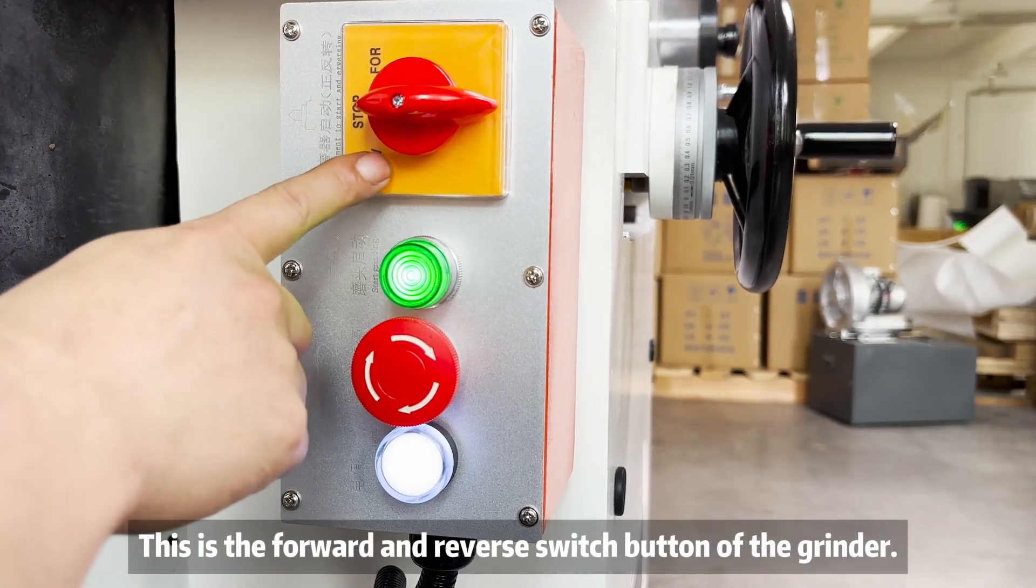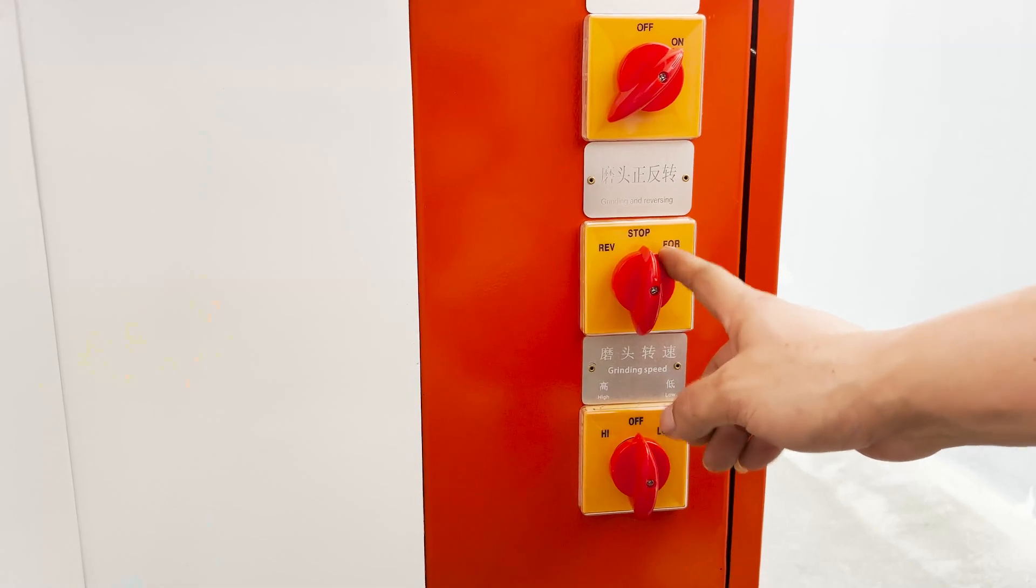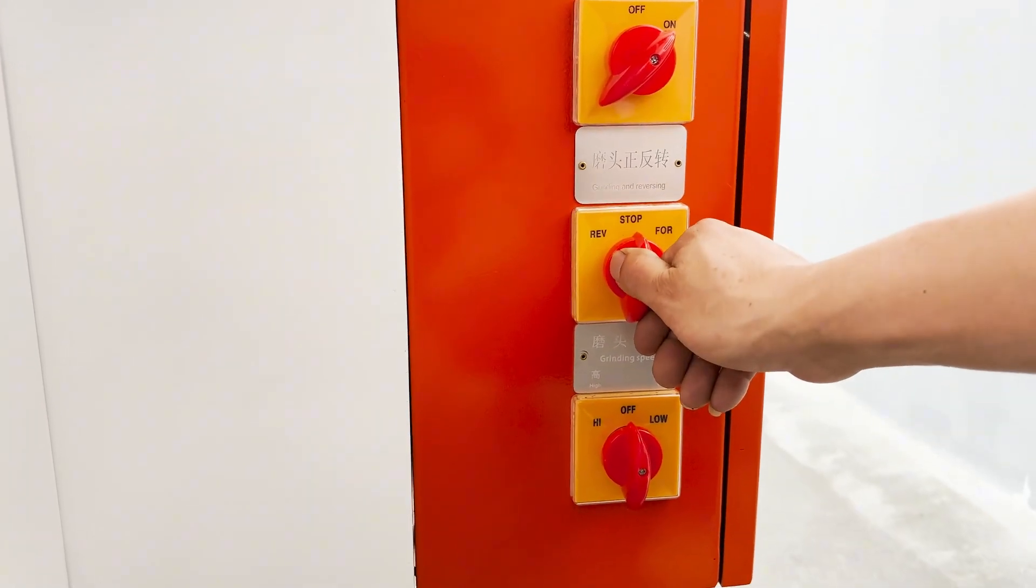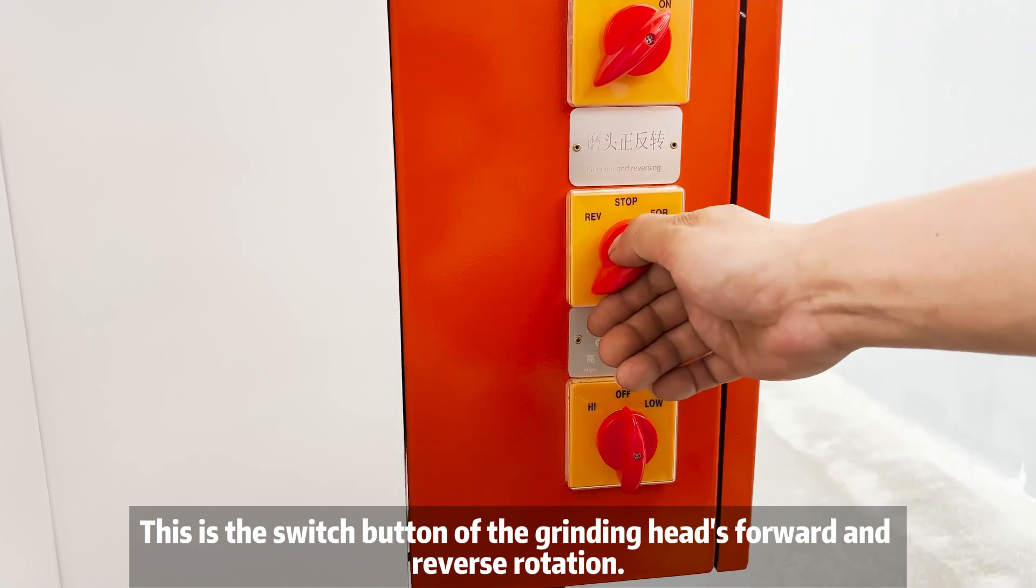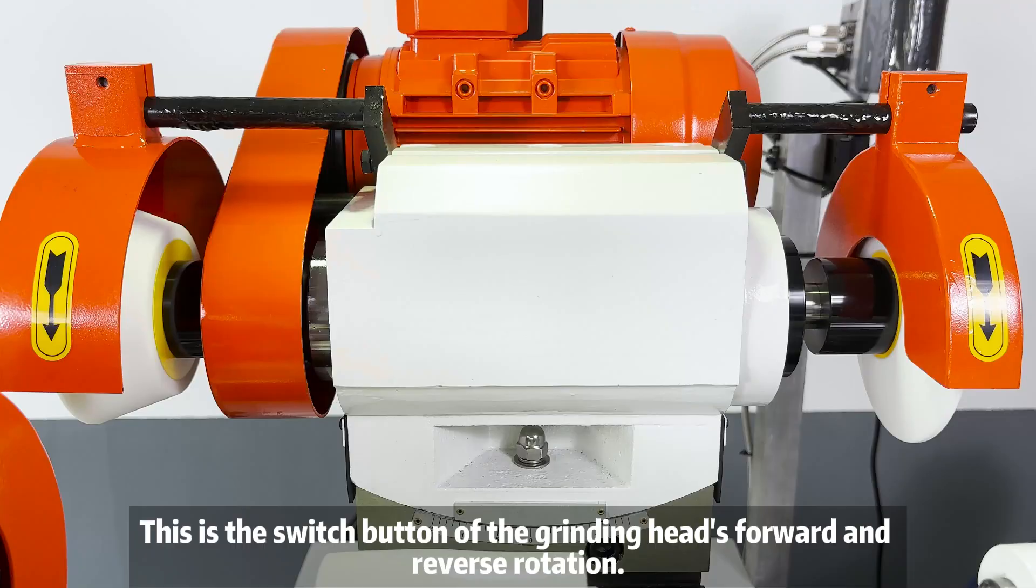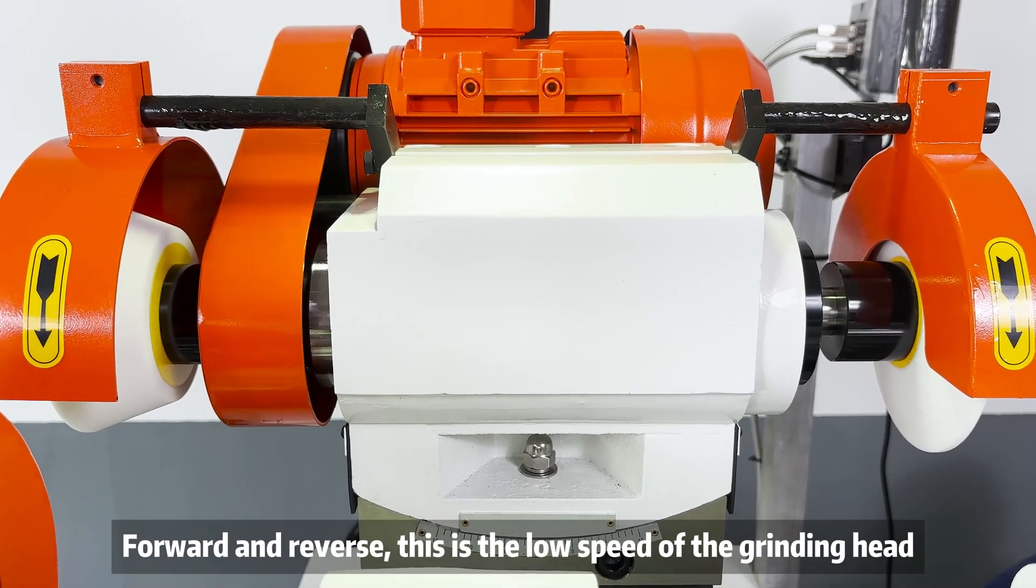This is the forward and reverse switch button of the grinder. This is the switch button of the grinding head forward and reverse rotation. Forward and reverse.